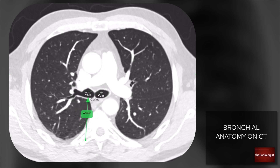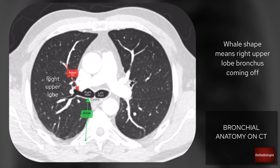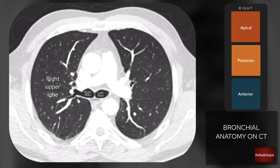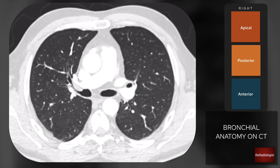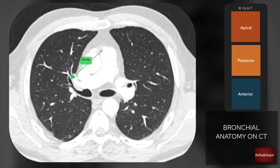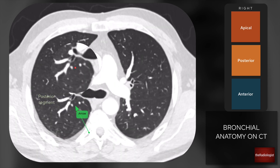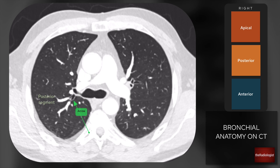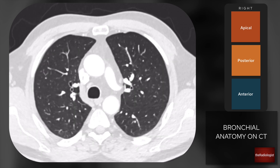On the right we can see this kind of whale shape here. Whenever I see this whale shape, that means you've got the right upper lobe bronchus coming off. So remember: the whale means right upper lobe bronchus. The right upper lobe then has three segments: apical, posterior and anterior. We can see the anterior segment coming off here going anteriorly, then the posterior segment coming off here, and the apical segment going towards the lung apex - three segments of your right upper lobe.